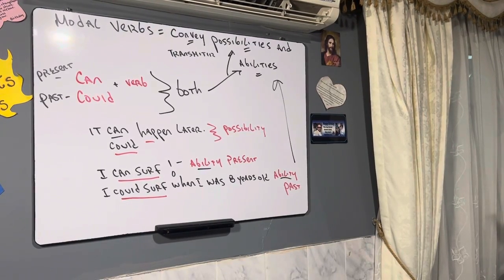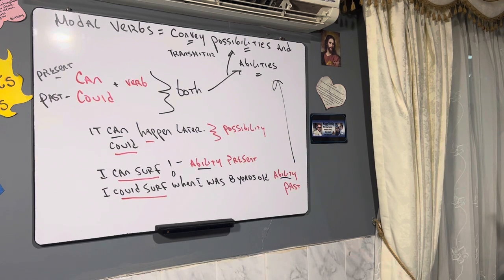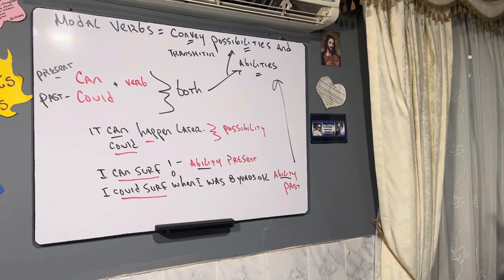Modal verbs, lesson four. Going from intermediate level, advancing a little bit more. Let's talk about modal verbs — not only possibilities, but there are two things: abilities also. Let's check it out together, let's remember.